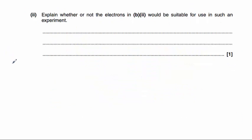Part 2 asks us to explain whether or not our electrons from B part 2 will be suitable for use in this experiment. Well, our wavelength was around 1.46 times 10 to the power of minus 9 metres,